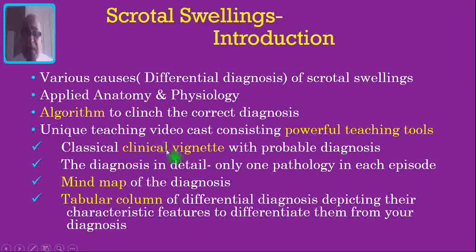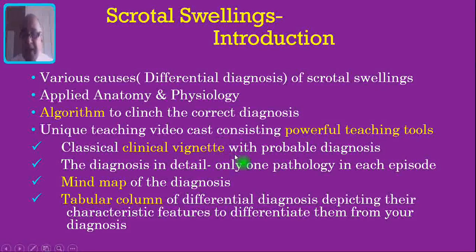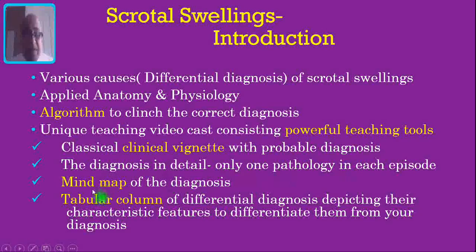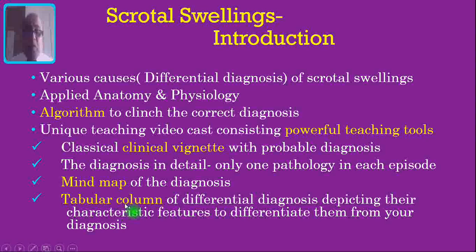In the subsequent five videos, which consist of very powerful teaching tools: number one, that will contain a classical clinical vignette, where I will guide you how to arrive at the most probable diagnosis. Then I will be talking about that diagnosis in detail, and in each episode I will be talking only about one pathology. Then, with the help of a mind map, I will put all these details in a single page — that is the beauty of the mind map. Then, with the help of a tabular column, I will show you how to eliminate all other possible diagnoses, so this tabular column can serve as a ready reckoner to clinch the correct diagnosis.